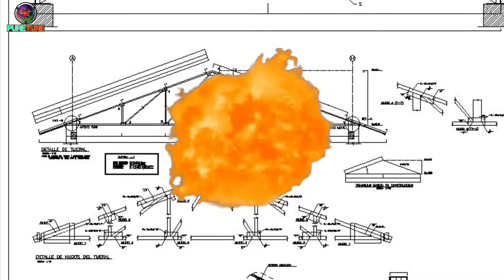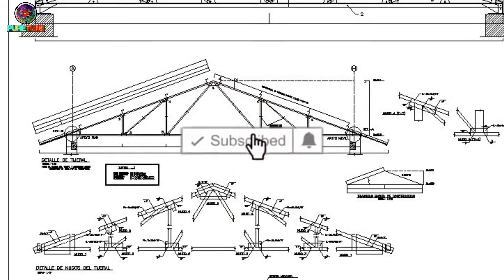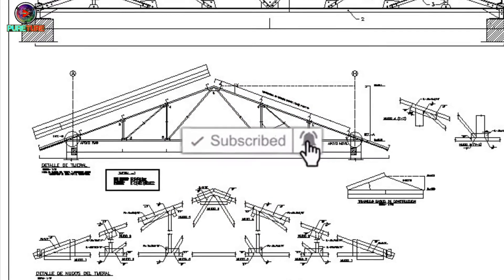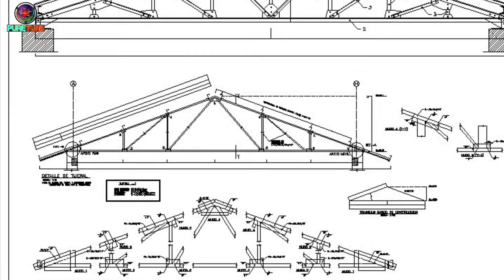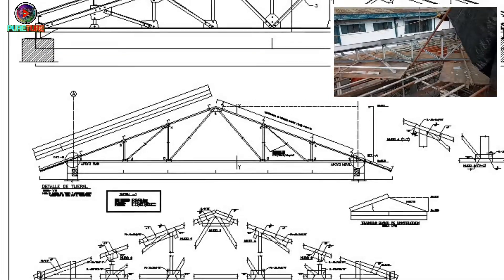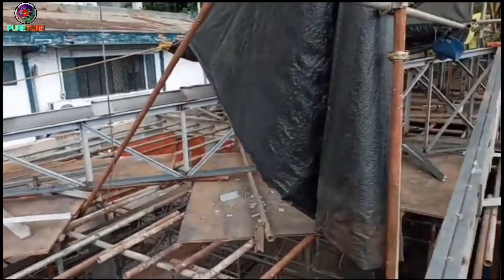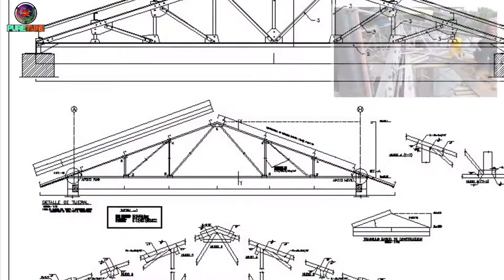Let's talk about why angle sections are used for steel trusses. Reason 1: Angle sections are more resistant towards buckling than plate sections.